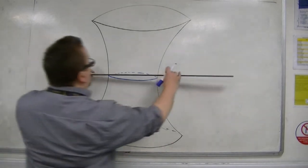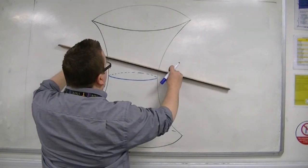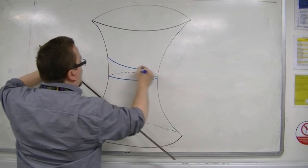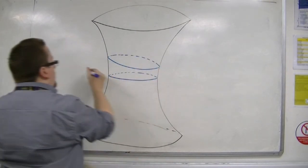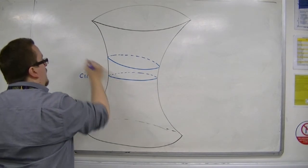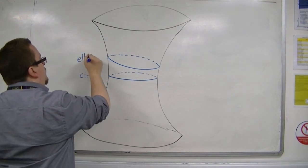If you cut it slightly at an angle, what you get is an ellipse. So we have a circle, and at a slight angle, you'll get an ellipse.